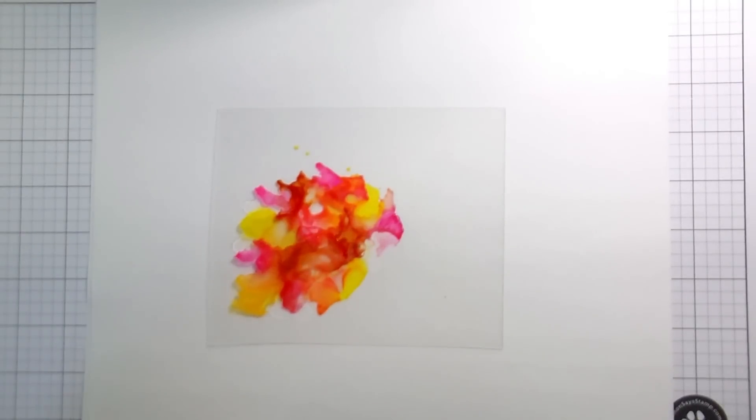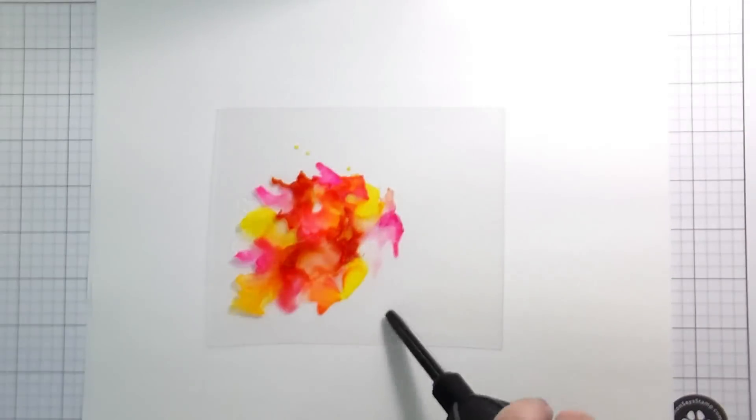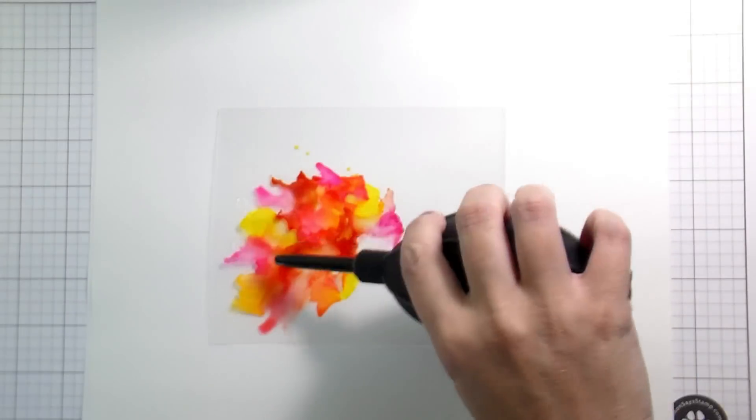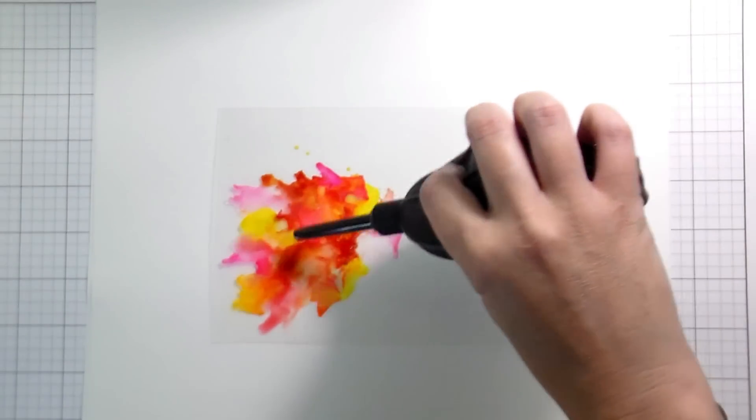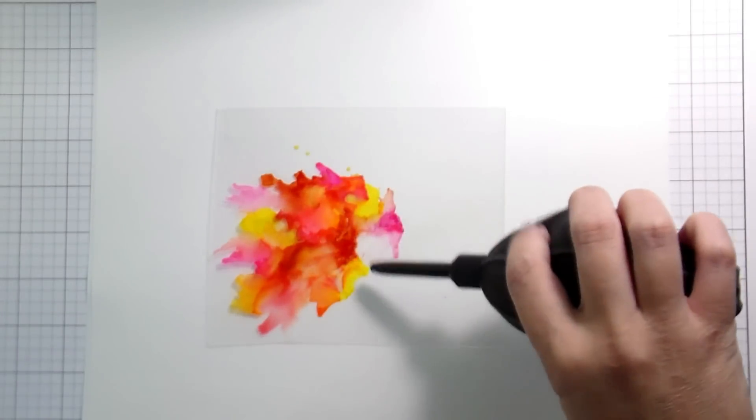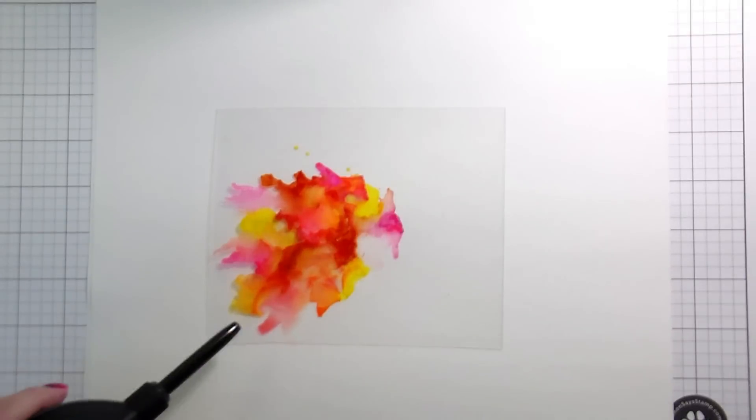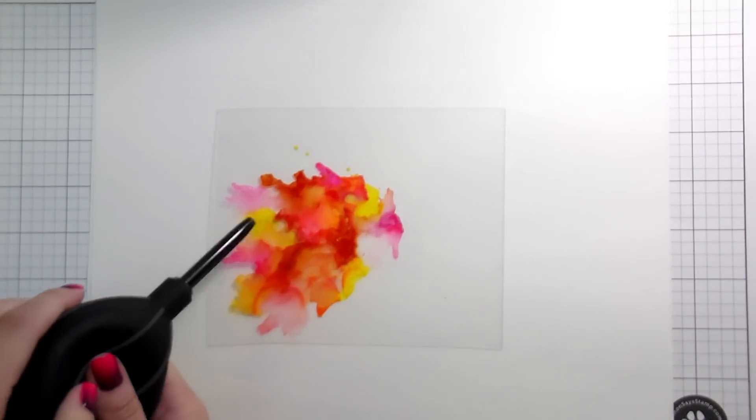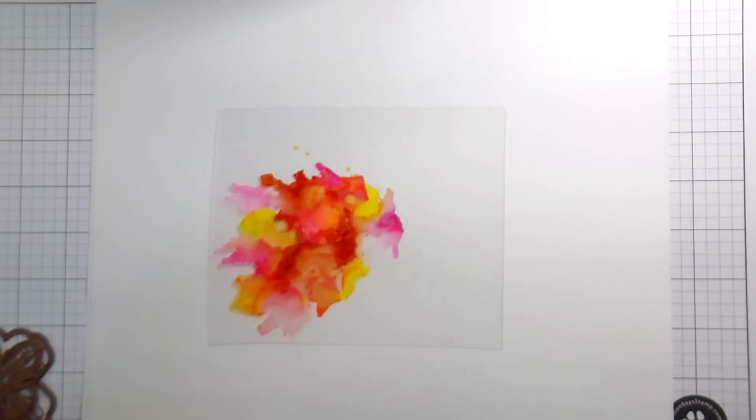I did find I did this two different ways. This is way number one, we're just applying the ink to the acetate and then die cutting out of that. And then I'm going to do it where I pre cut the butterflies out of the acetate and then add the alcohol ink. So both ways worked.